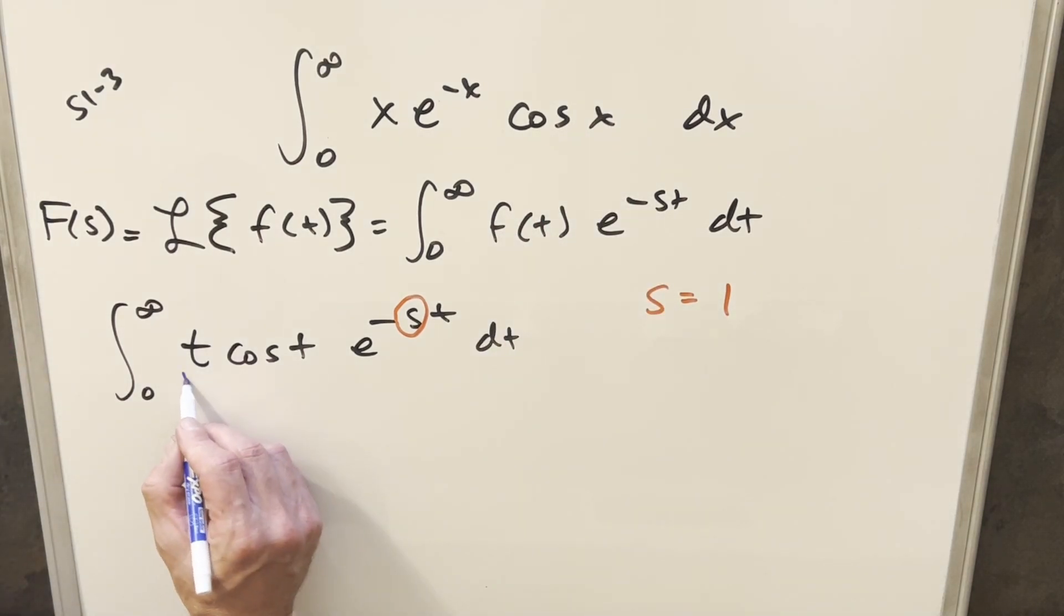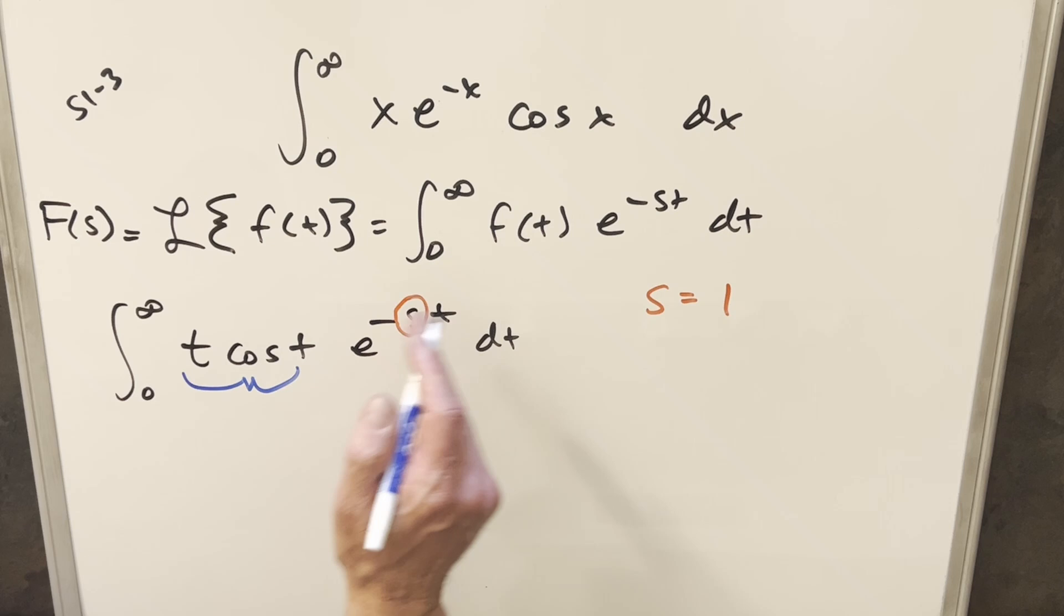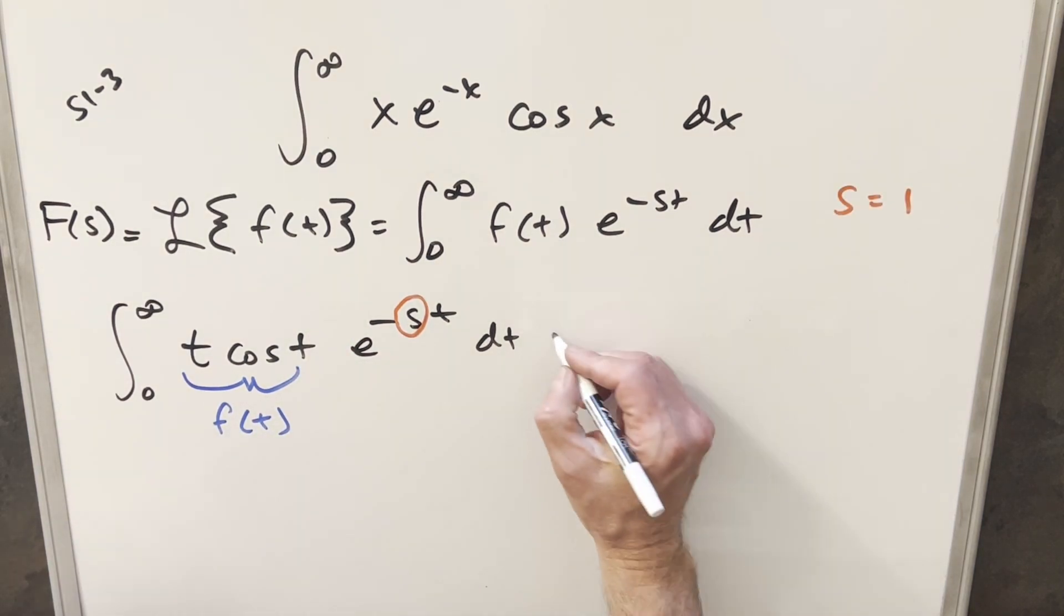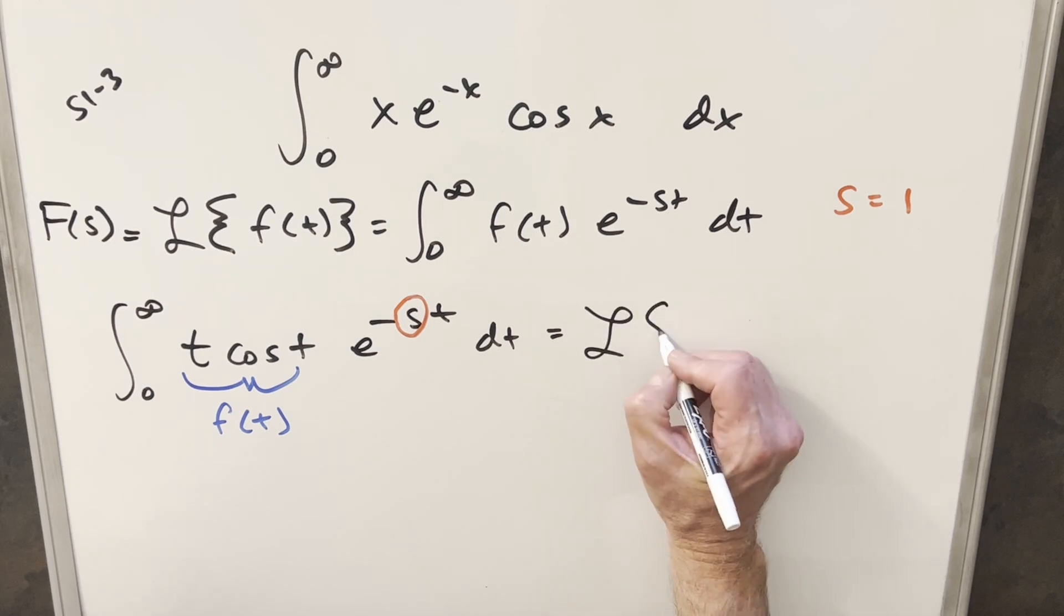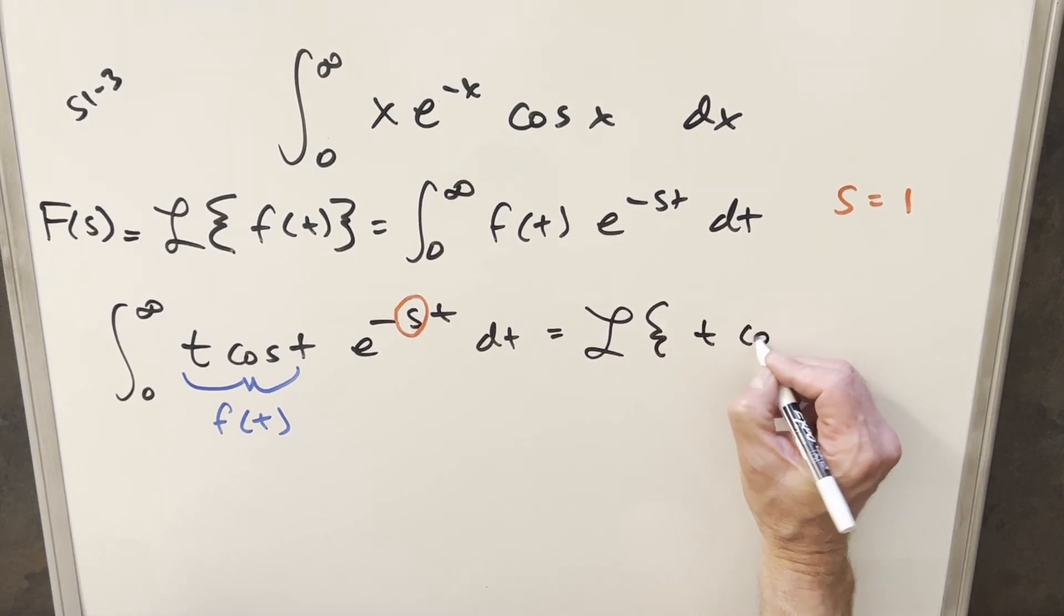And then now that we have this written like this here, matching to our formula, this piece right here is going to be our f of t. And then just writing it like this, we can say this is the same thing as the Laplace transform of t cosine t.